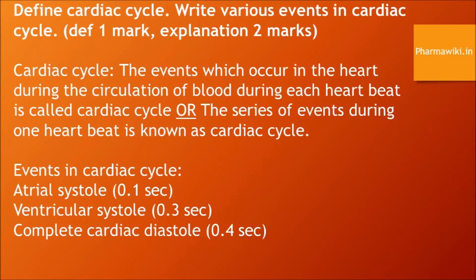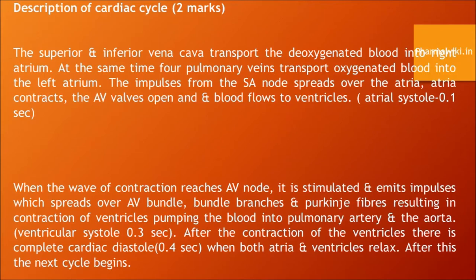Cardiac cycle description: The superior and inferior vena cava transport deoxygenated blood into the right atrium. At the same time, four pulmonary veins transport oxygenated blood into the left atrium. Impulses from the SA node spread over the atria; the atria contract, the AV valves open, and blood flows to the ventricles. When the wave of contractions reaches the AV node, it emits impulses which spread over the AV bundle, bundle branches, and Purkinje fibers, resulting in contraction of the ventricles, pumping blood into the pulmonary artery and the aorta. After contraction of the ventricles, there is a complete diastole when both atria and ventricles relax, and the next cycle begins.